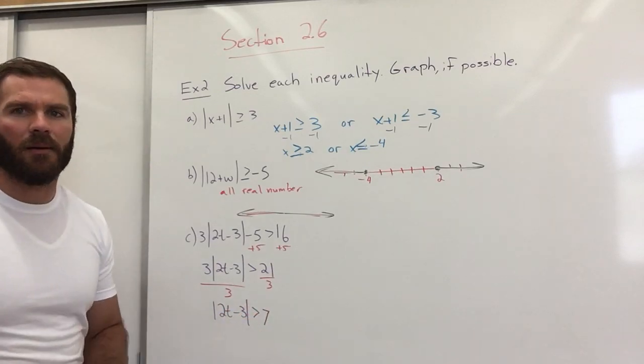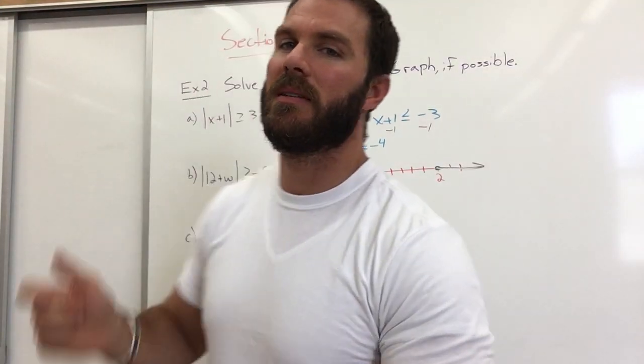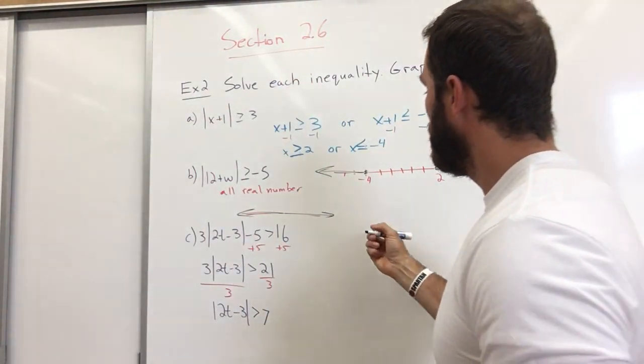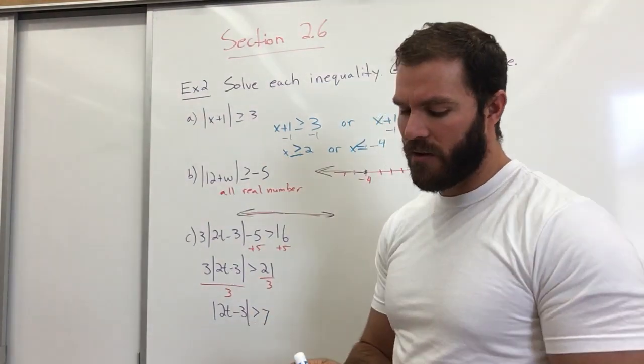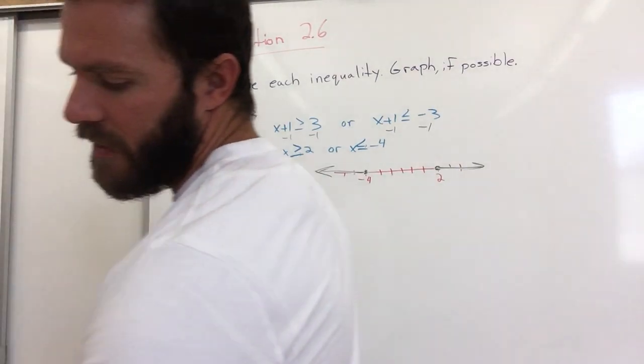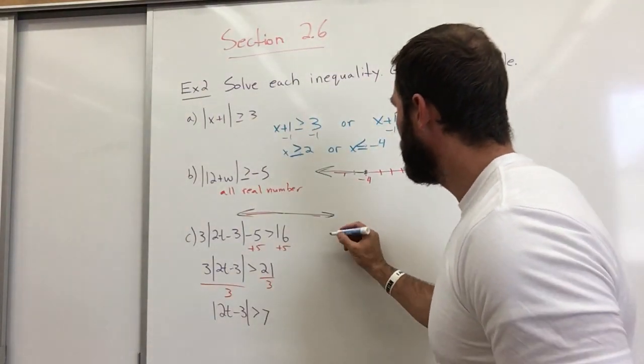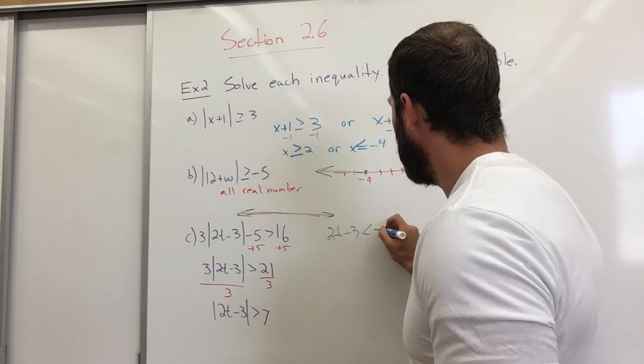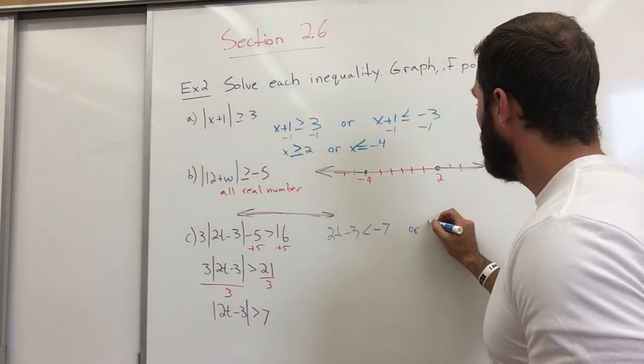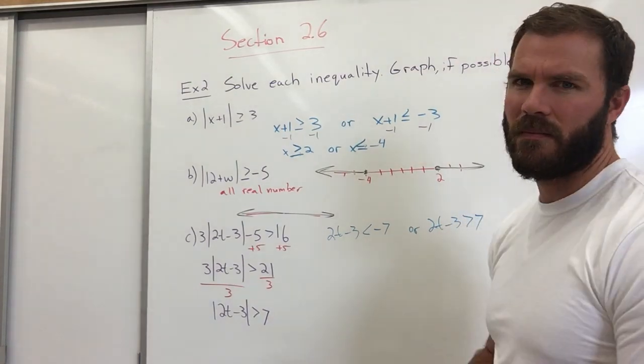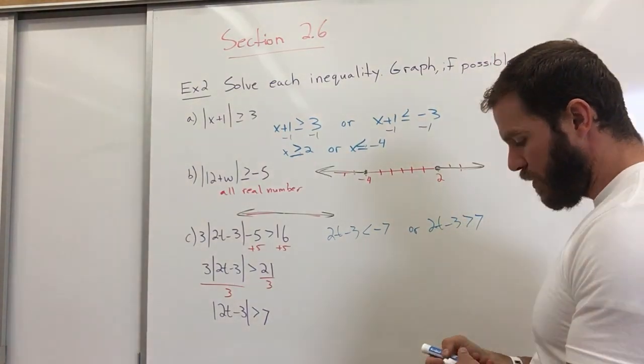Now I can set up my two inequalities. I hope you can see that. So it says that it's greater than C, so we're going to have 2t minus 3 is less than negative 7, or 2t minus 3 is greater than 7. Now we'll just go ahead and do our math by adding 3. So we have 2t less than negative 4, or 2t greater than 10.